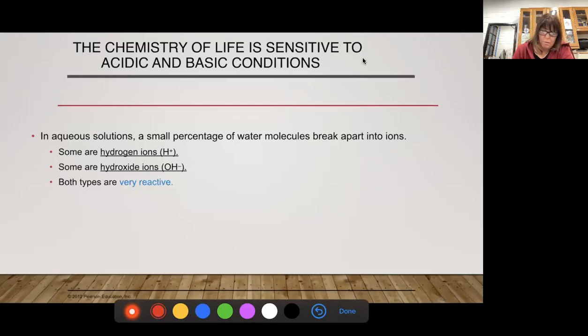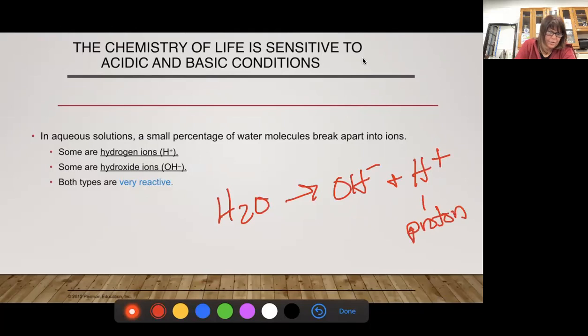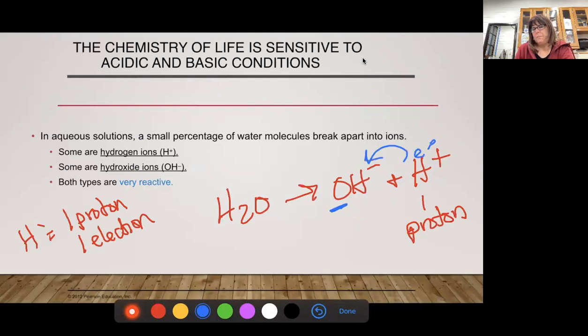In an aqueous solution, a small percentage of water breaks down into ions. So what we're saying is water can break down into OH negative plus an H plus. It basically, this is called a proton, because remember hydrogen, oh why did I write a K, hydrogen equals one proton and one electron. And what happens here is this oxygen rips the electron off this hydrogen, and so we're stuck with a proton.